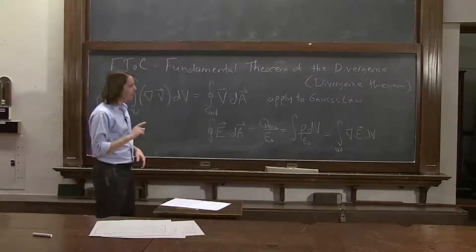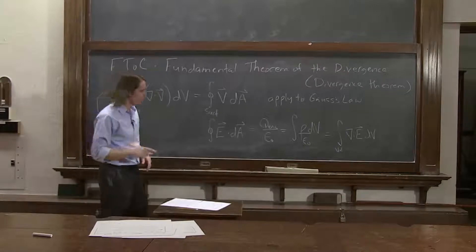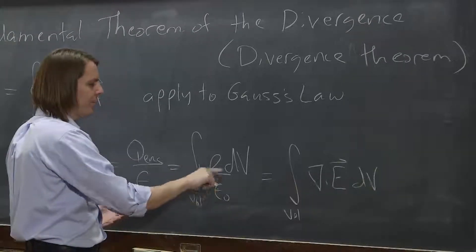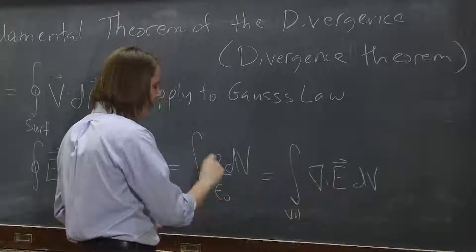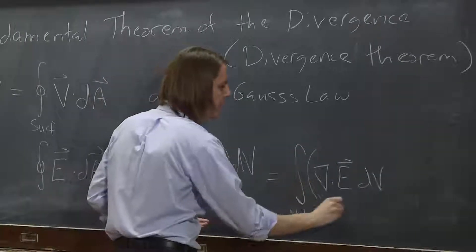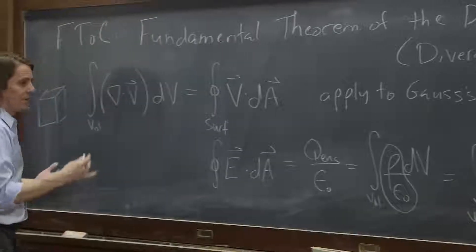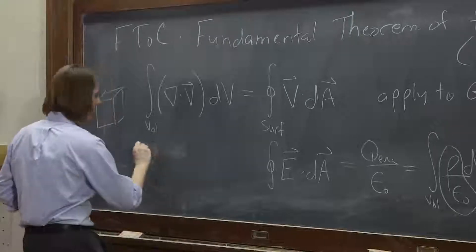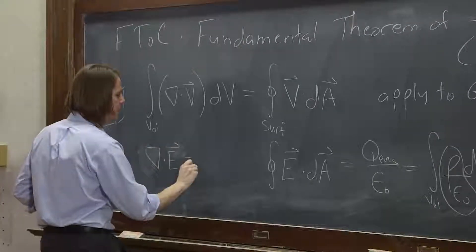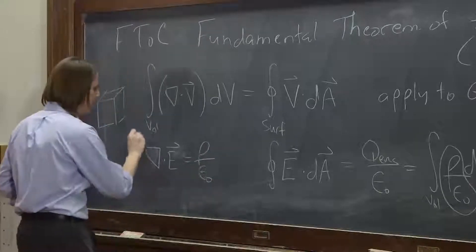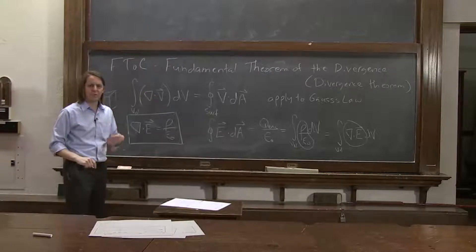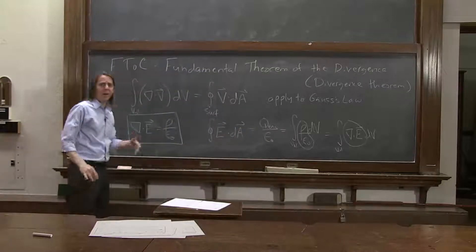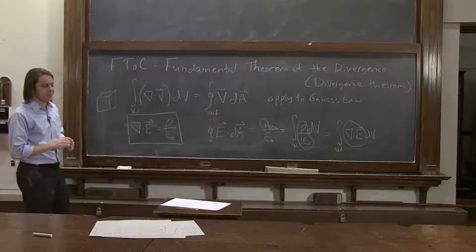And then this is where you get the differential form of one of Maxwell's equations. You see that the thing inside the integral is the same. This is a volume integral of rho over epsilon naught dV. This is a volume integral of del dot e dV. So these two parts in this volume are the same. And this is what gives us the first differential form. We've got del dot e equals rho over epsilon naught. So here, using fundamental theorem of calculus, I've shown you that this is the same Gauss's law as what you're used to. And now we'll look and see when to use which one.